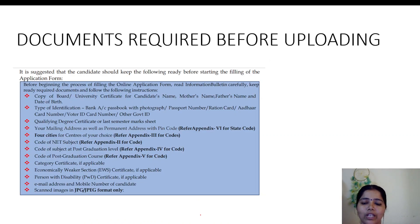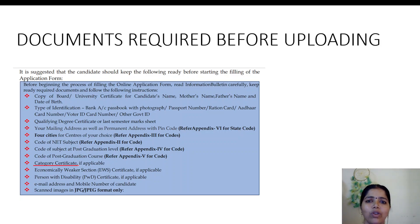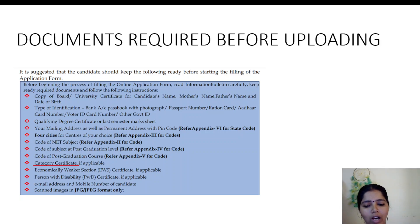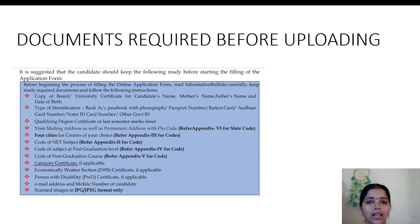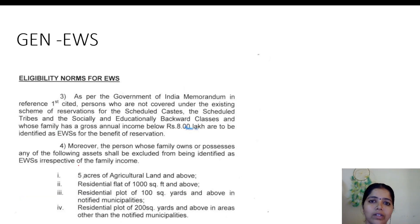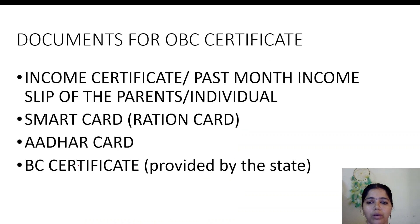Before uploading your application form, kindly make sure that you have all these documents. Our doubts are mainly with the category certificate. This time, we are supposed to manually upload the category certificate so that we will not get any problems in the future after clearing the exam. It is on the safer side to upload all the category certificates. Please kindly contact your ESEVA centres nearby your location and approach them with the possible documents we have mentioned here, so that you will get your OBC certificate.